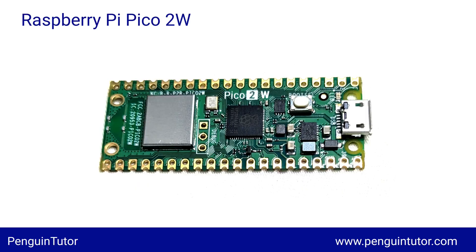If you've missed the announcement, Raspberry Pi have released a new microcontroller board, the Raspberry Pi Pico 2W. It's based around the RP2350 microcontroller used in the Pico 2 but it adds wireless networking, so you get the performance benefits of the Pico 2 along with the optional RISC-V instruction set, extra security, and the ability to connect to a Wi-Fi network and Bluetooth version 5.2. It's only about 10% more expensive than the earlier Pico W and cheaper than some other microcontrollers. For this project you could use the Pico W, but this is a nice board for future projects.